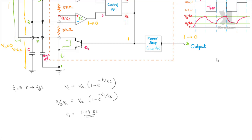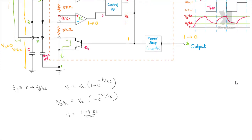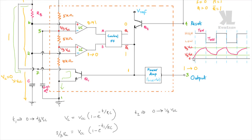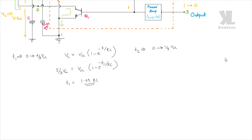When the capacitor voltage reaches 2/3 VCC, the lower threshold is 1/3 VCC and the charging potential is VCC. We can write: 1/3 VCC = VCC × (1 − e^(−T2/RC)). By solving this, we get T2 is equal to 0.405 RC.